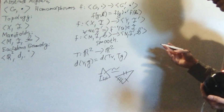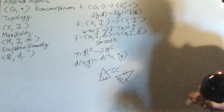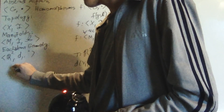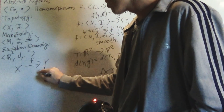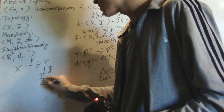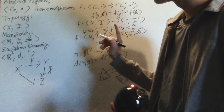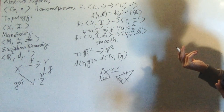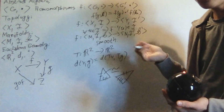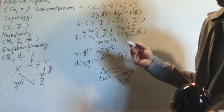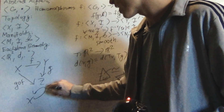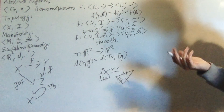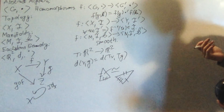Structure-preserving maps give us notions of how to transfer structures. An important property is that composition preserves structure: if I have a continuous map F from X into Y and another continuous map G from Y into Z, then G composed with F should also be continuous. This is also true for homomorphisms — the composition of homomorphisms is a homomorphism. Additionally, for every topological space, the identity map is structure-preserving, because it preserves everything literally.